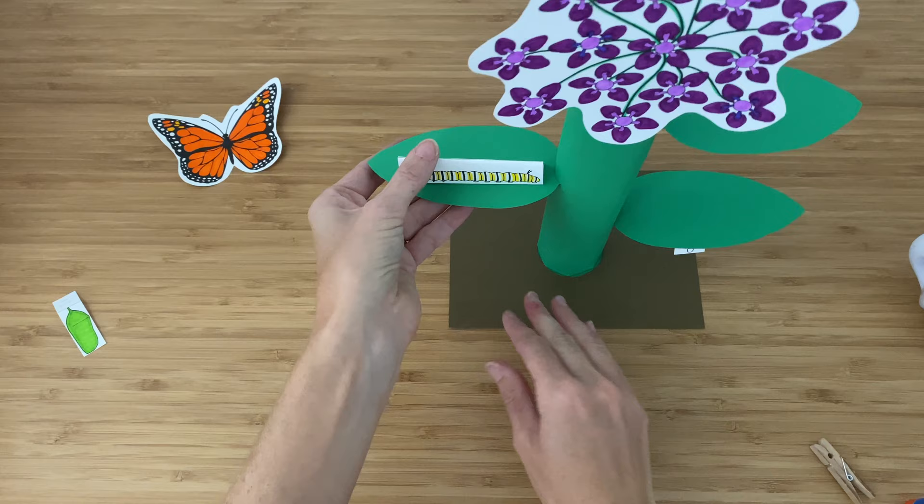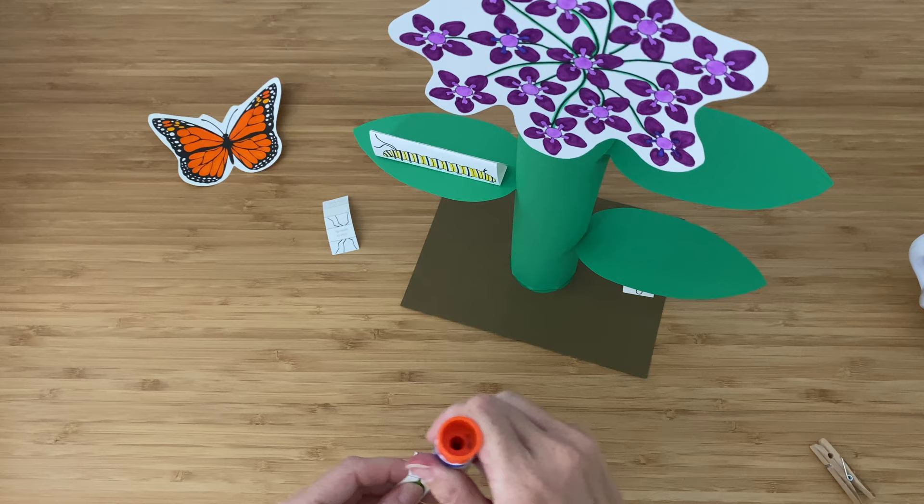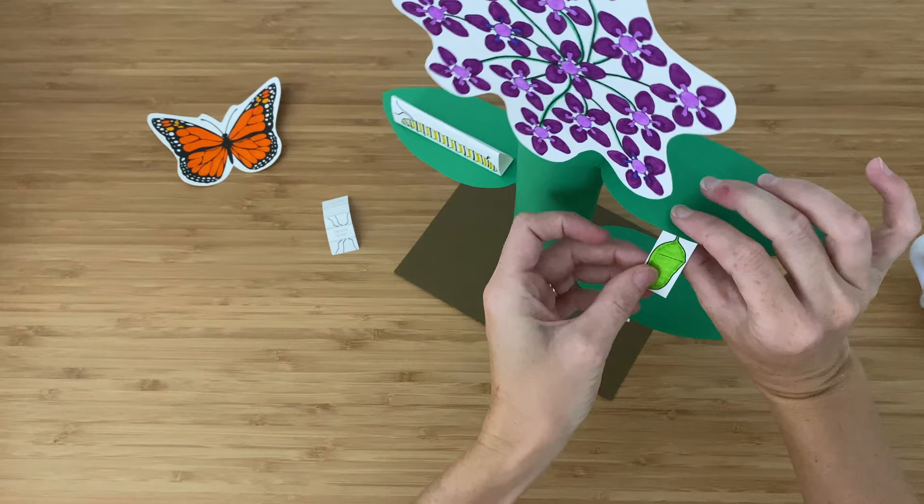And over here I have the chrysalis. It's not a cocoon. That would be a moth. And the chrysalis will hang from the top leaf near the edge.